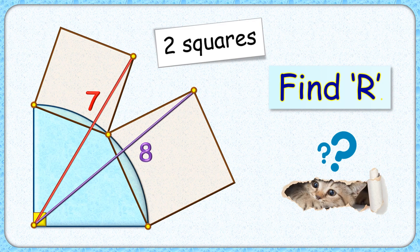Welcome everyone to this interesting question. Given is a quadrant and two squares — the side lengths of these squares form the chords of the quadrant. Given is the length of this red line segment and purple line segment, which are seven and eight centimeters.